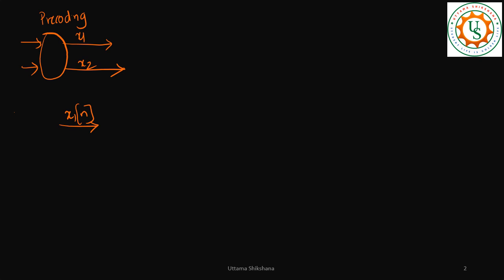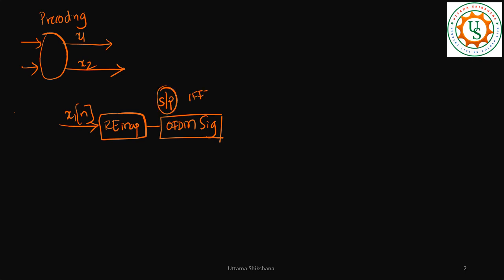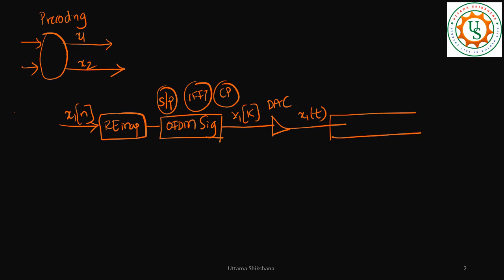After the pre-coding block, for each antenna port we will have first re-mapping, then OFDM signal generation. Here we apply a serial-to-parallel converter, then IFFT, then add a cyclic prefix. After that we have x1(k) samples for the subcarrier. This will then be sent to a digital-to-analog converter, giving us x1(t) — an analog signal. From here onwards this is what I call the RF chain.